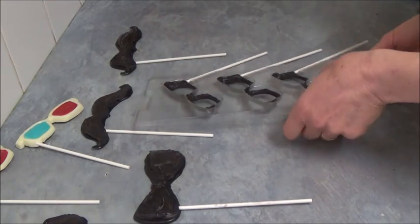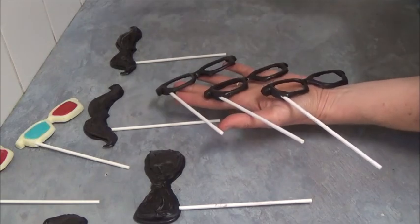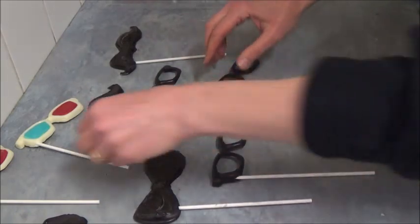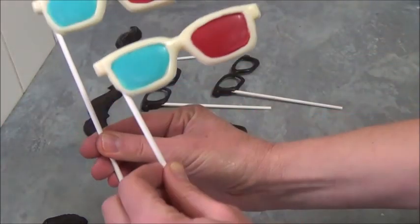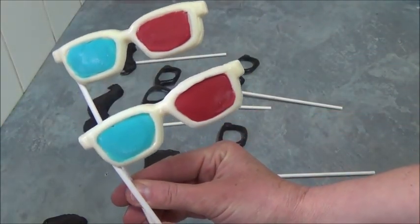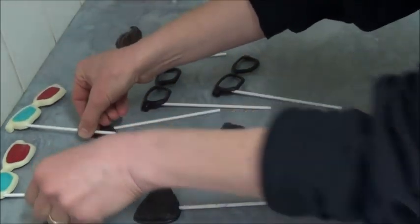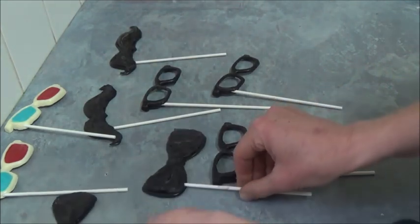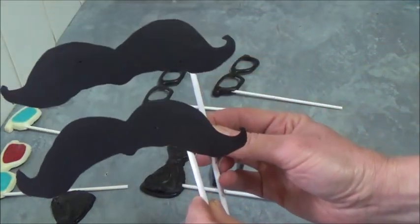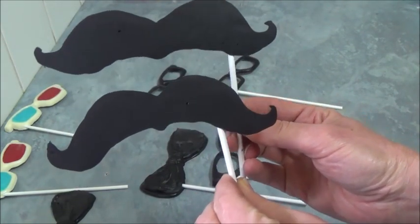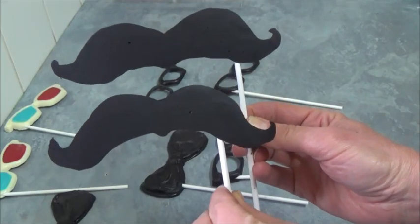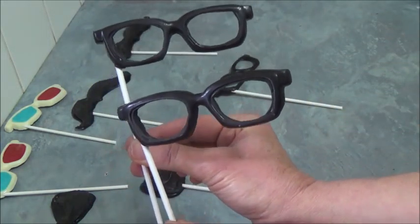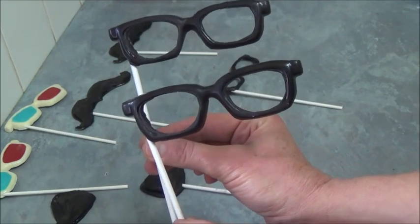Once everything is set, simply invert carefully from the mold and here we have a variety of fun looking lollipops. We made 3D glasses which are really cool for fun parties, bow ties and moustaches which are great for Father's Day, birthdays, or parties, as well as glasses frames which are cool for selfies or photo shoots.